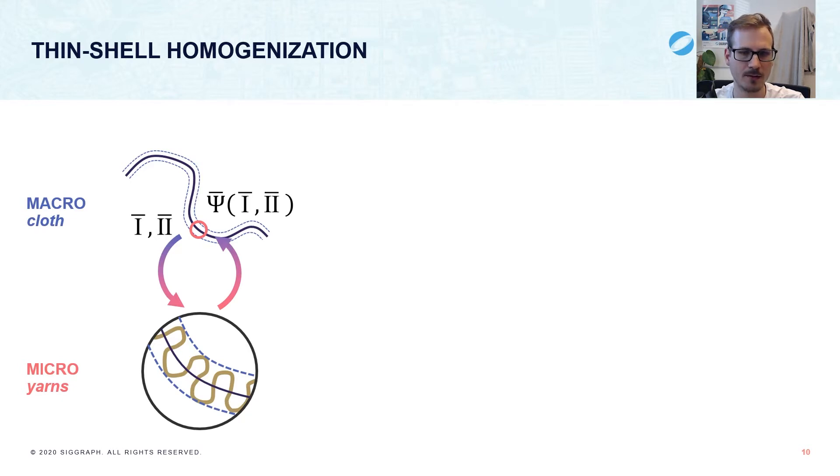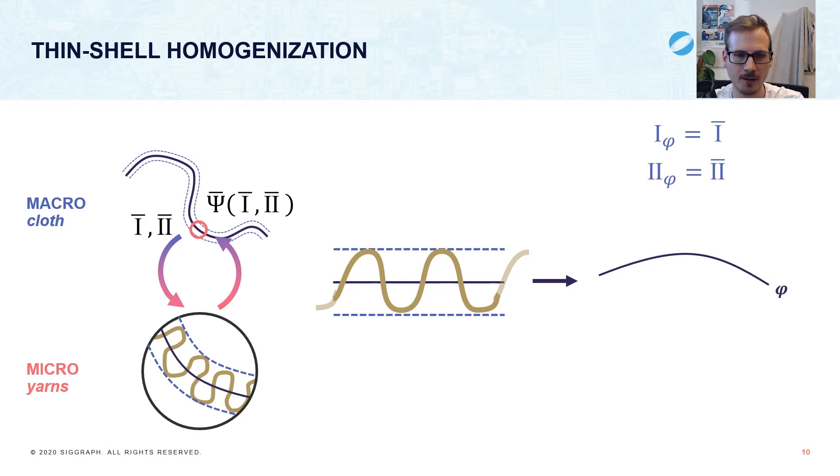To do this, we need to describe the microscale yarn structure and figure out how to apply the macroscale deformation to it. Since we want to homogenize a material for cloth made from periodic patterns, a periodic tile of the pattern is a natural choice for representing the microscale. To deform the pattern according to the macroscale deformation, we propose finding a mid-surface phi whose fundamental forms are constant and equal to the macroscale ones. That is, a surface with the correct stretching and bending everywhere.